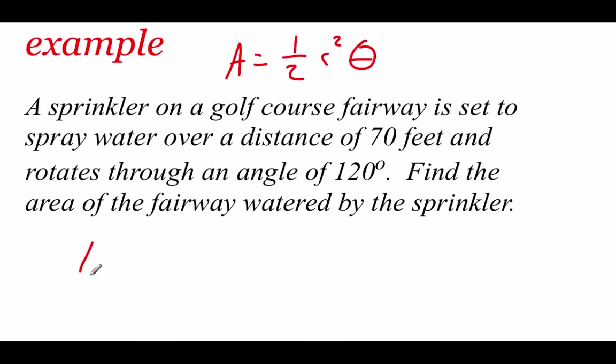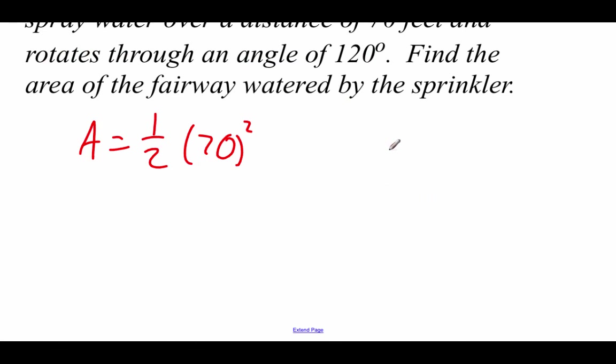And we can actually start plugging in some of this information. We know the radius is going to be 70 feet. That's how far this water is spraying. So we're going to take one half times 70 squared. Now we do have to figure out what our angle theta is going to be. And remember, theta has to be in radians. Well, we're given an angle in degrees. So in order to convert that over,